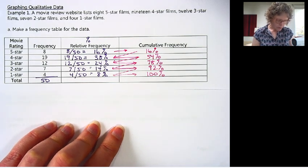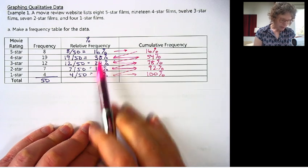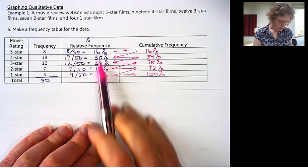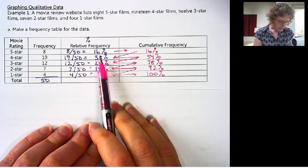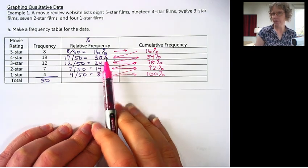One thing that could be tricky is round off error. These were really nice numbers and they all came out to an even percentage. What if it was like 16.2% or 16.253217?